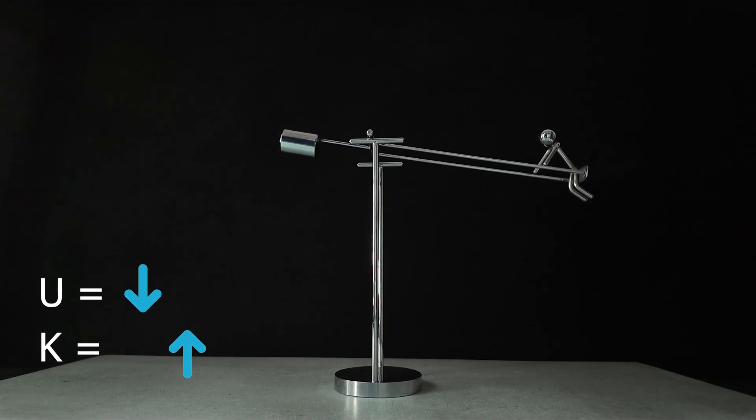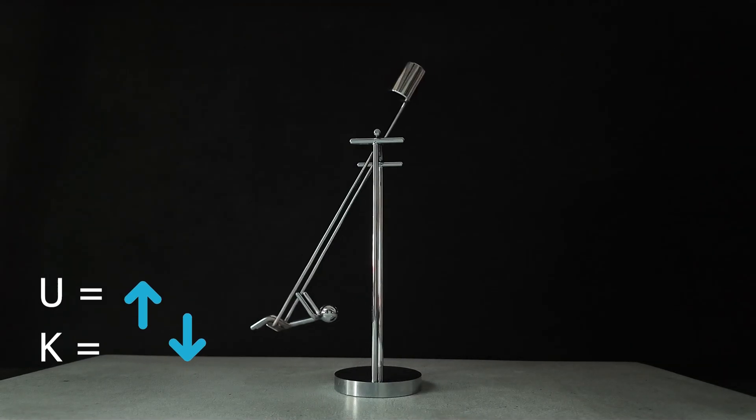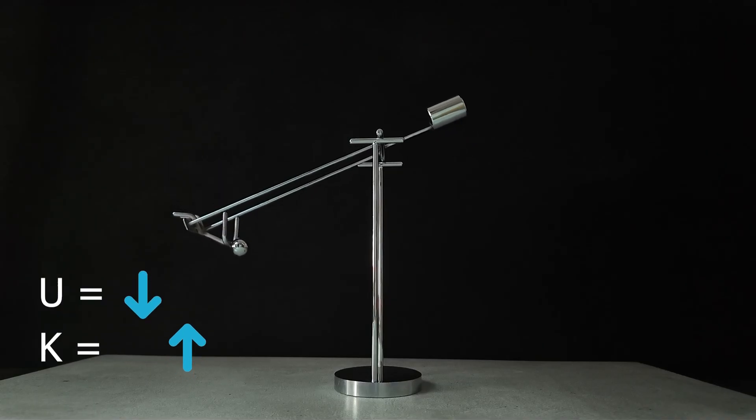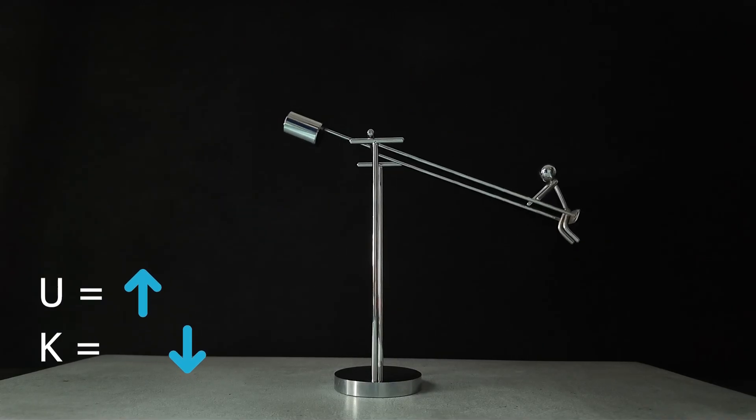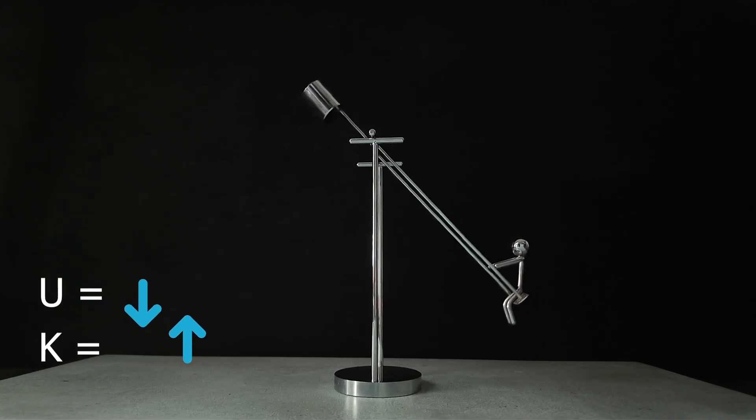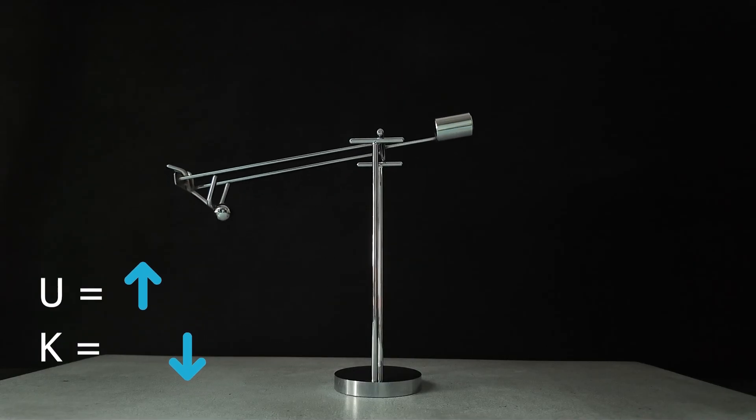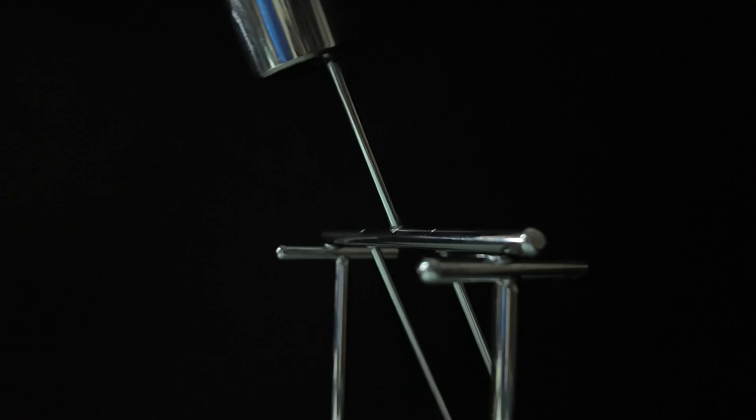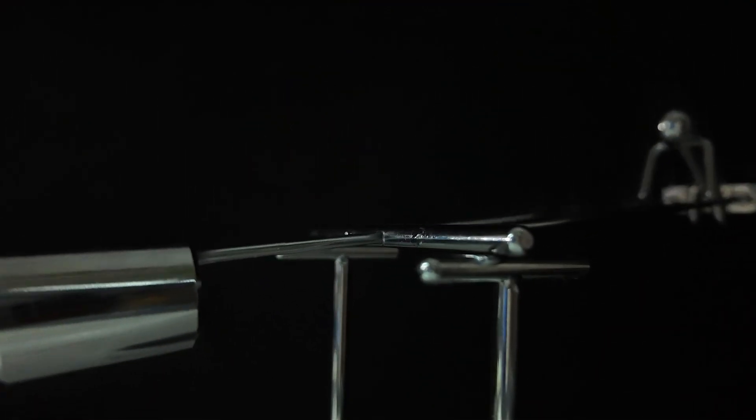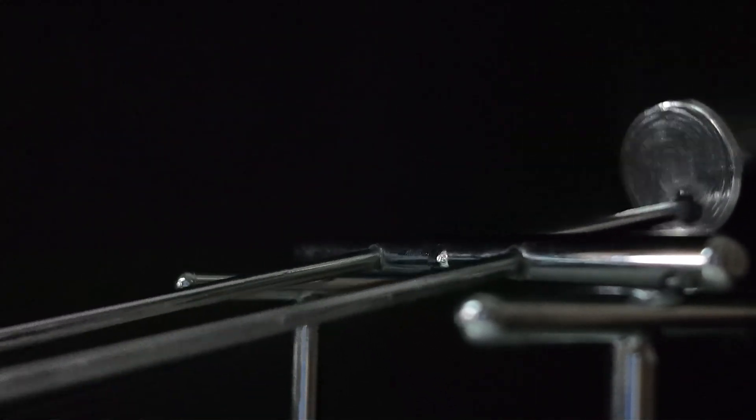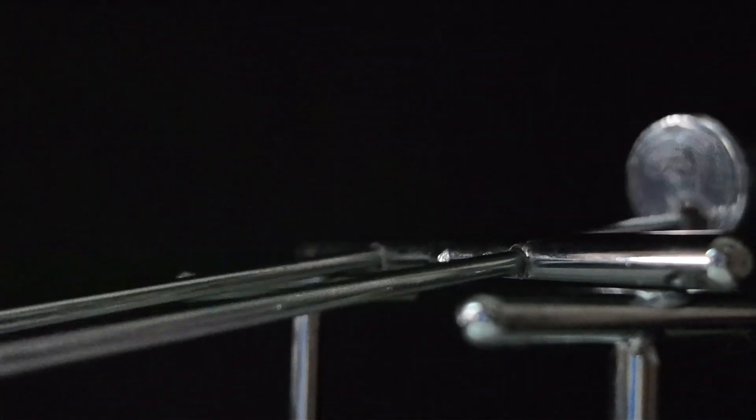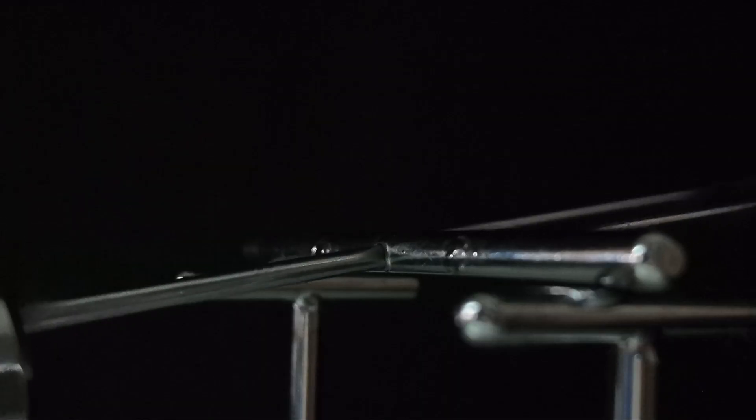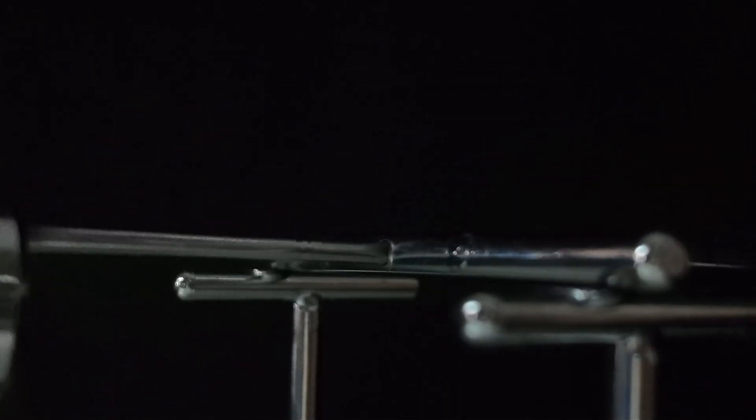After releasing the sculpture, the gravitational potential energy begins converting into kinetic energy. At the lowest point, the potential energy is zero and kinetic energy is at its maximum. As it continues moving upward, the kinetic energy starts turning back into potential energy, but now in a slightly smaller amount than before. That's because some of the energy is lost as heat due to friction at the pivot point and air resistance acting on the sculpture.